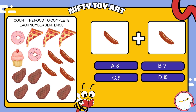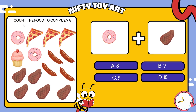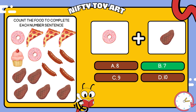We have sausages and sausages. How many foods is that in total? That's right, seven.